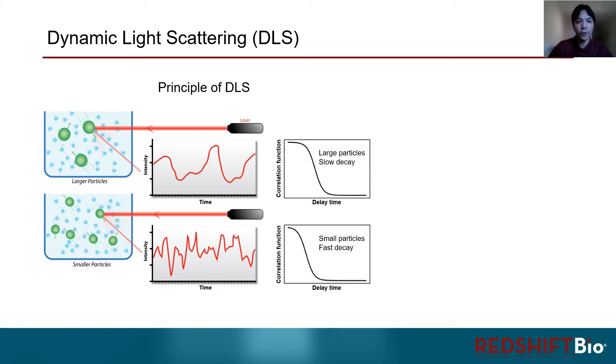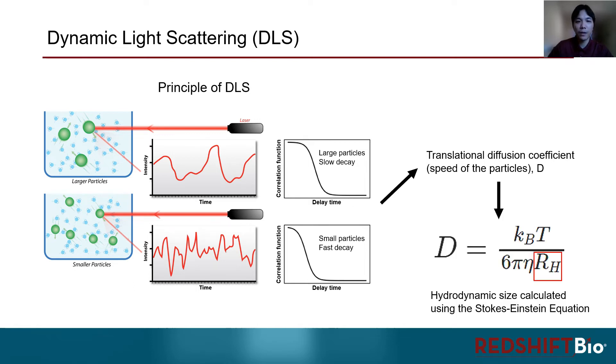For larger particles that diffuse slower, the correlation signal loss will take longer. For smaller particles that diffuse faster, the correlation signal will decay faster. And as we can see here, this process is plotted as a correlation function. This is then used to calculate the translational diffusion coefficient, or simply the speed of the particles. From here, the hydrodynamic size of the particles is calculated using Stokes-Einstein equation.